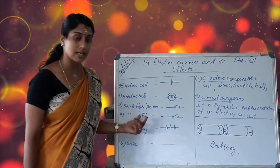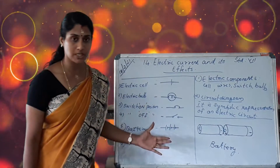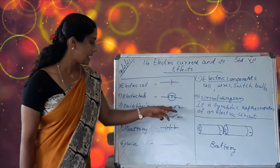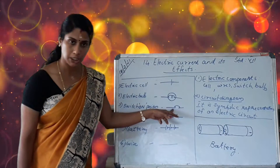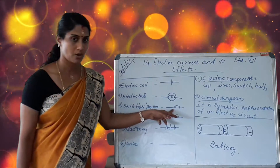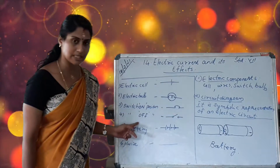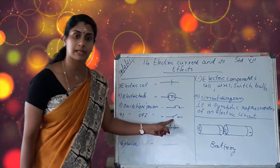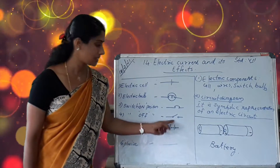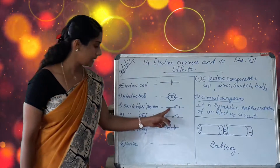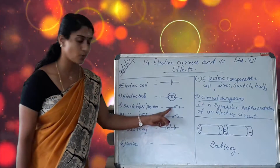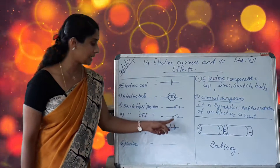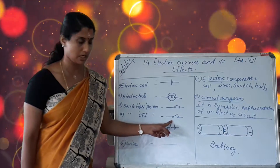The switch in the on position has a specific symbol, and the switch in the off position has a different symbol. These symbols are very important — this one is in the on position, and this one is in the off position.